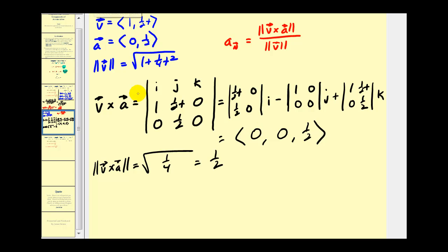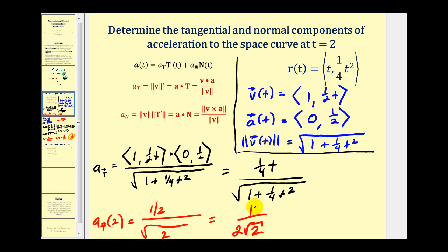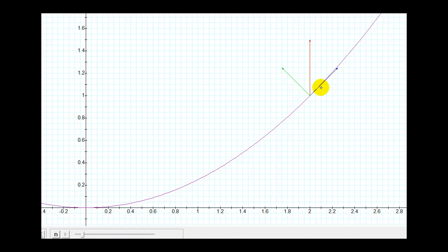With the magnitude of the cross product equal to one half, and the denominator being the magnitude of v — the square root of one plus one fourth t squared — we evaluate at t equals two to get the square root of two in the denominator. The normal component is one over two square root two, the same value as the tangential component. Looking back at the graph, this makes sense: the tangent and normal vectors appear to be the same length, and the sum of those two vectors gives the acceleration vector.